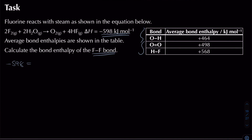On the reactants side: two F–F bonds give 2x, plus four O–H bonds (4 × 464 = 1856). On the products side: one O=O bond (498) plus four H–F bonds (4 × 568 = 2272), giving a total of 2770. So the equation becomes: −598 = 2x + 1856 − 2770.